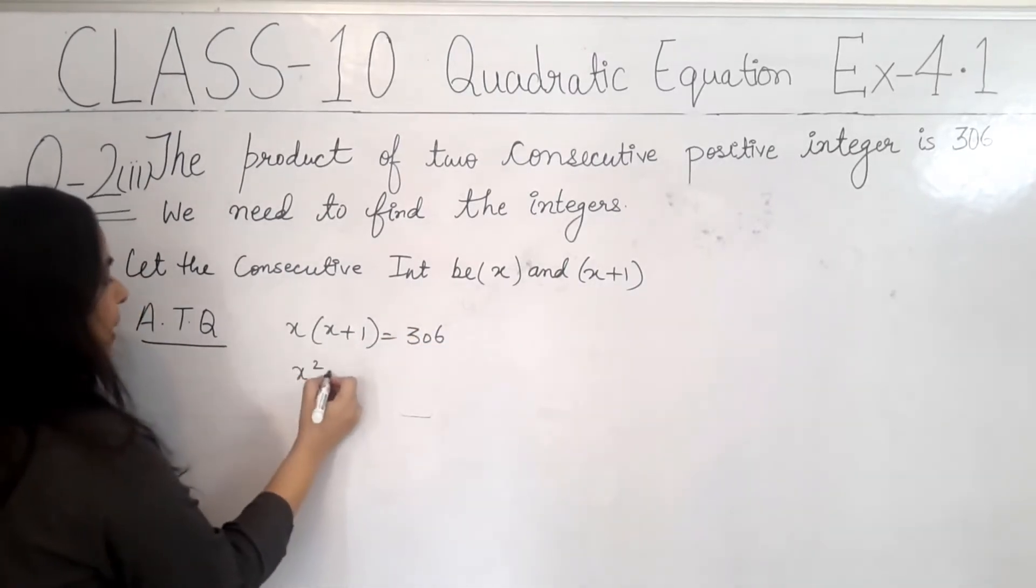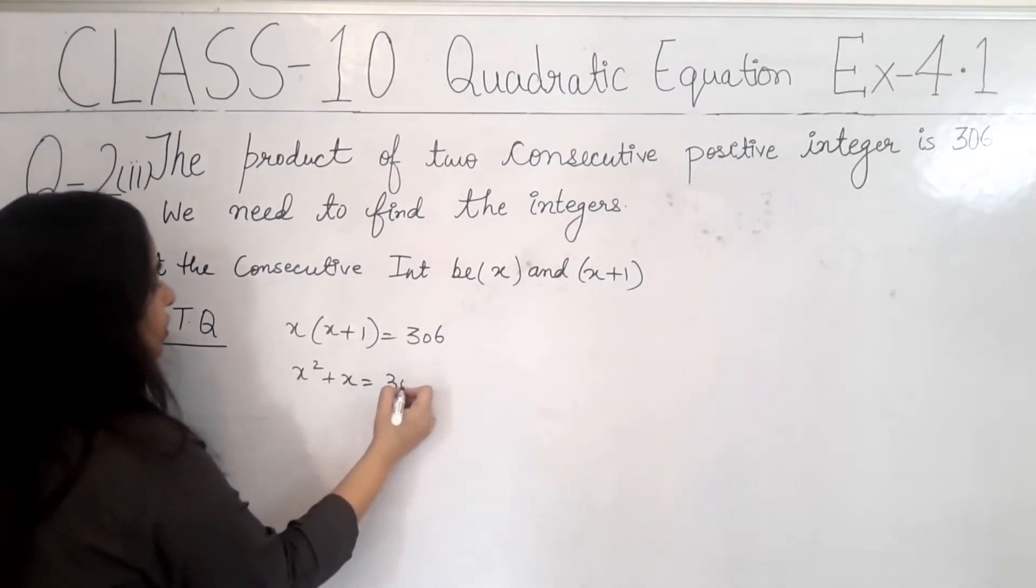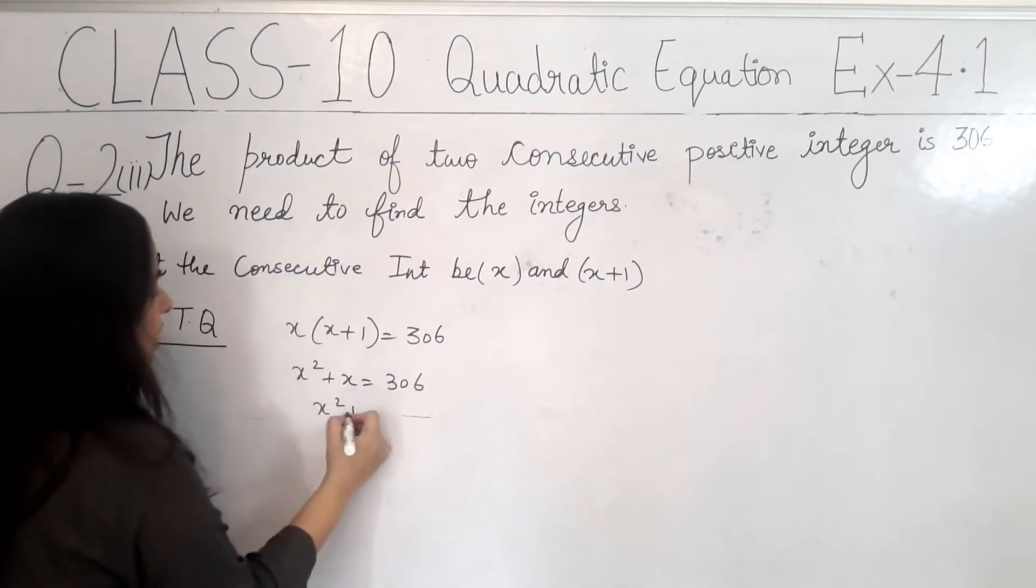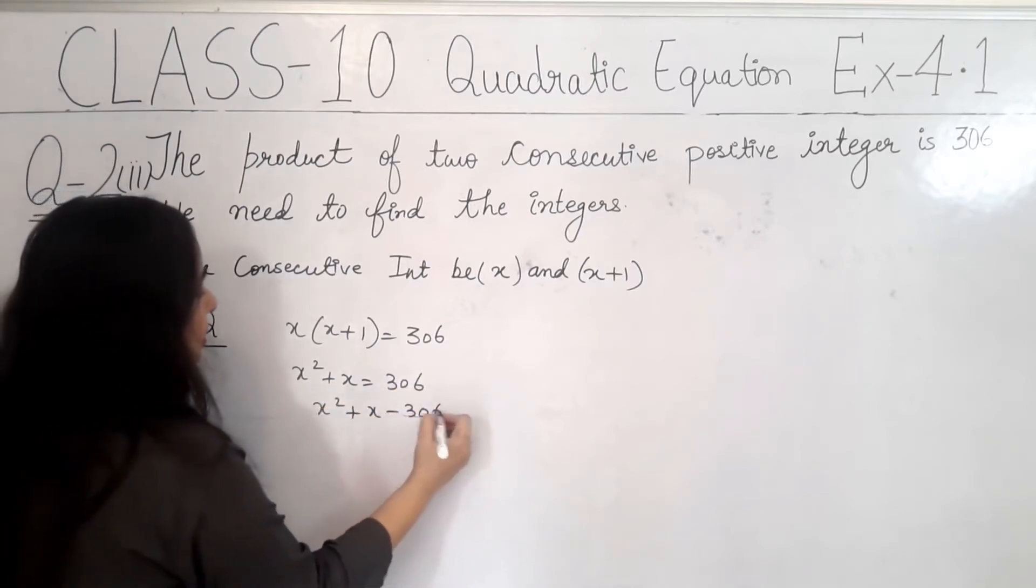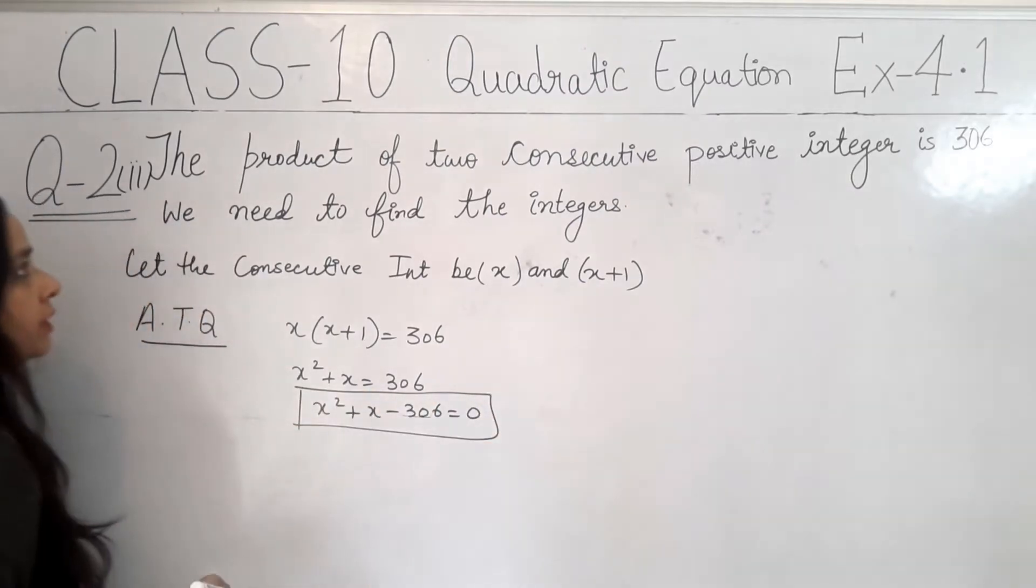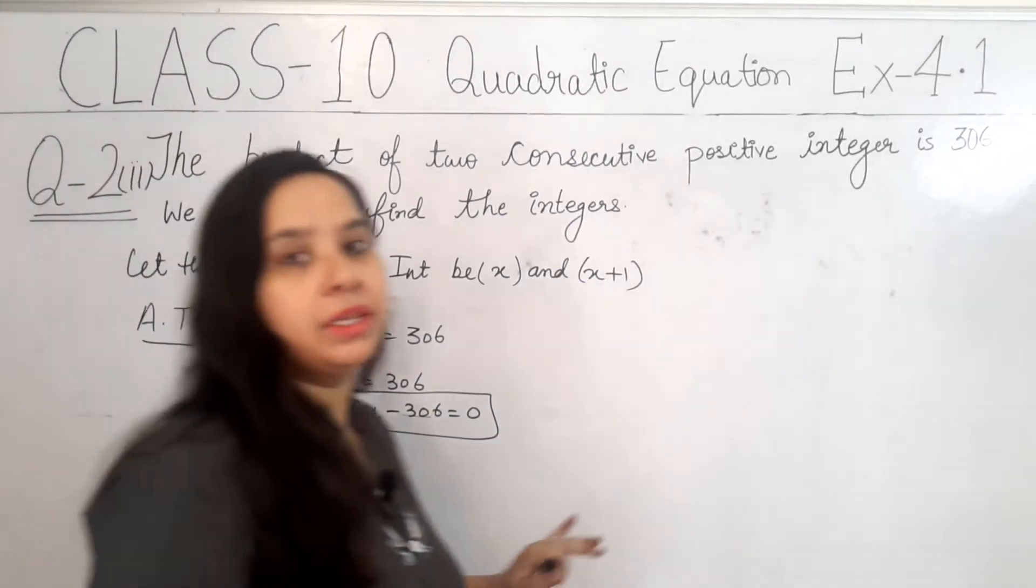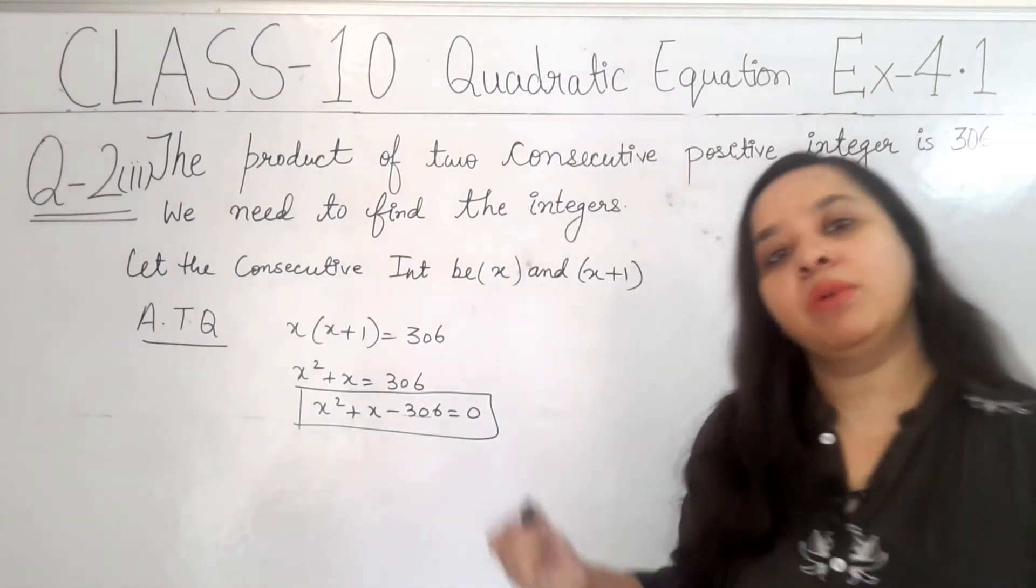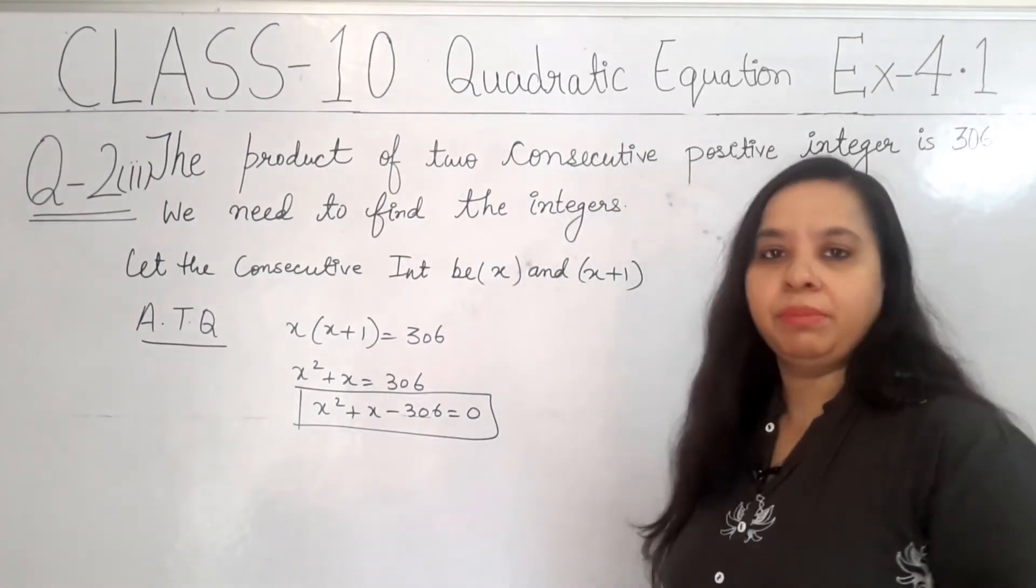So, x square plus x is equal to 306. x square plus x minus 306 is equal to 0. Now, this is our quadratic equation. This is a quadratic equation. The chapter is quadratic equation. So, most of the equations will become quadratic. Now, we will simplify it.